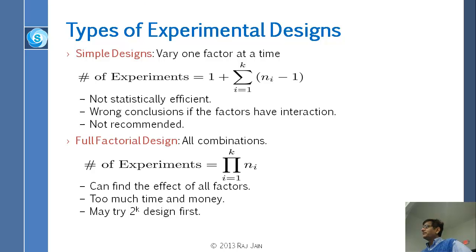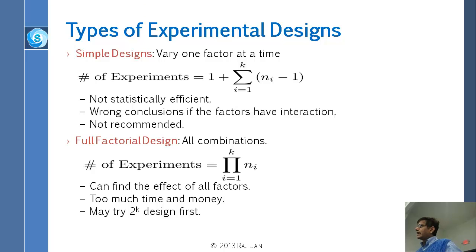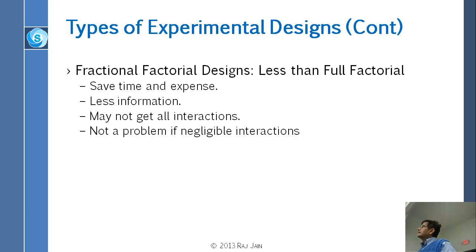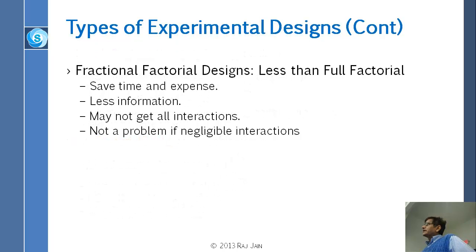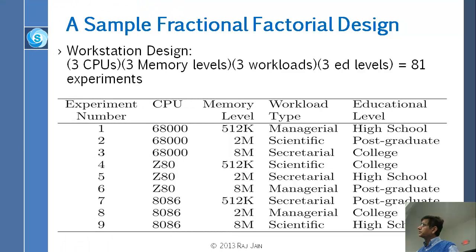The other extreme is full factorial design, where you do all possible combinations, and the number of experiments equals the product of all Ni's — the product of the number of levels. This will help you find all the factors, but it will take too much time and money. We will explain what 2^k design is, and then there is fractional factorial design, which uses fewer experiments than full factorial. It saves time and expense with less information — you may not get all the interactions — but it is not a problem if interactions are negligible. The goal is really to teach you about fractional factorial design.